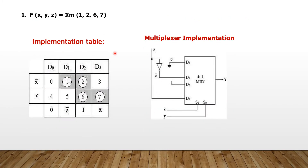Let us take one more example. f(x, y, z) = Σ(1, 2, 6, 7). Again it is a 3-variable function with 4 minterms. Using the same formulas as the previous problem, since it has 3 variables, the multiplexer type is 2 power (n minus 1) to 1, so we are again going to use a 4 to 1 multiplexer.